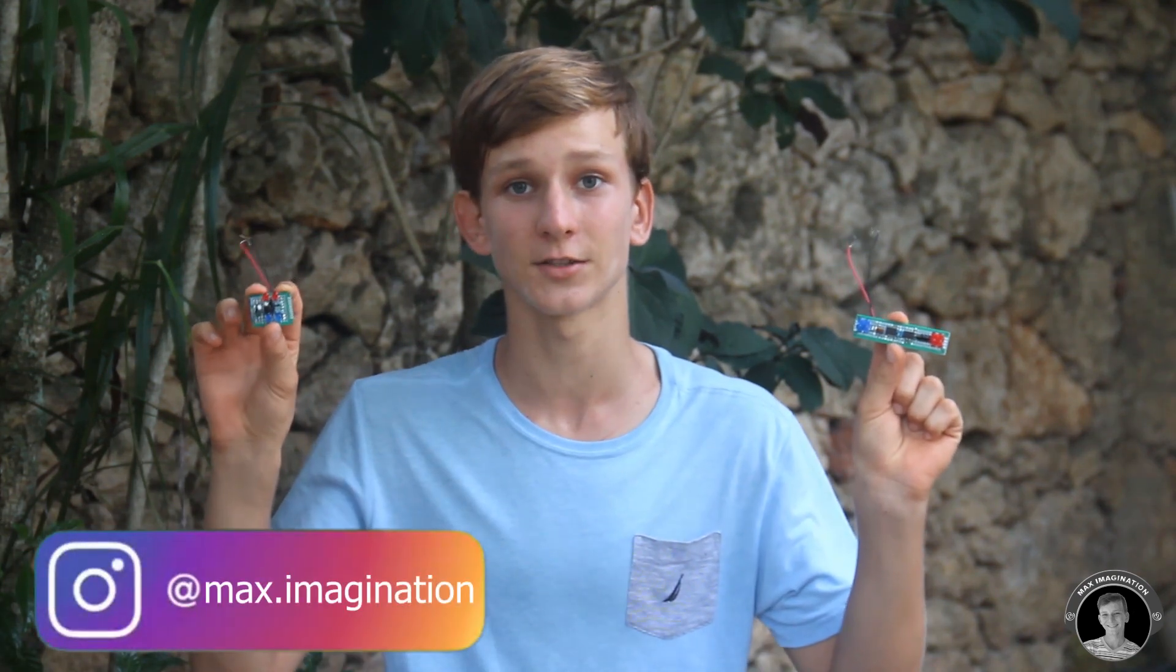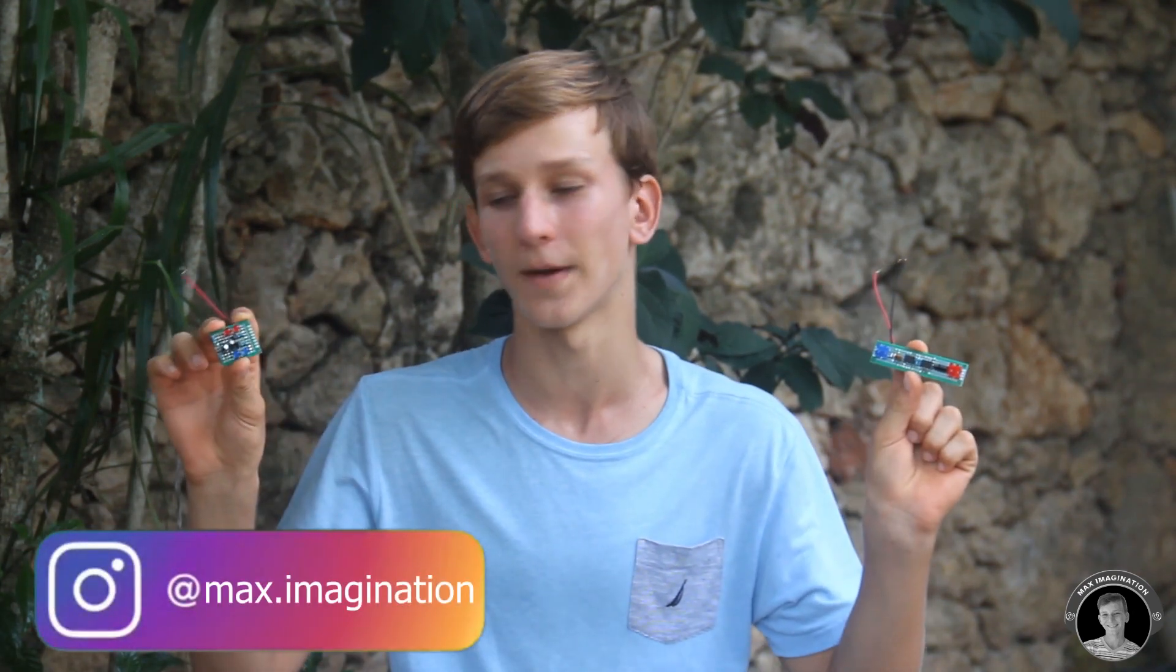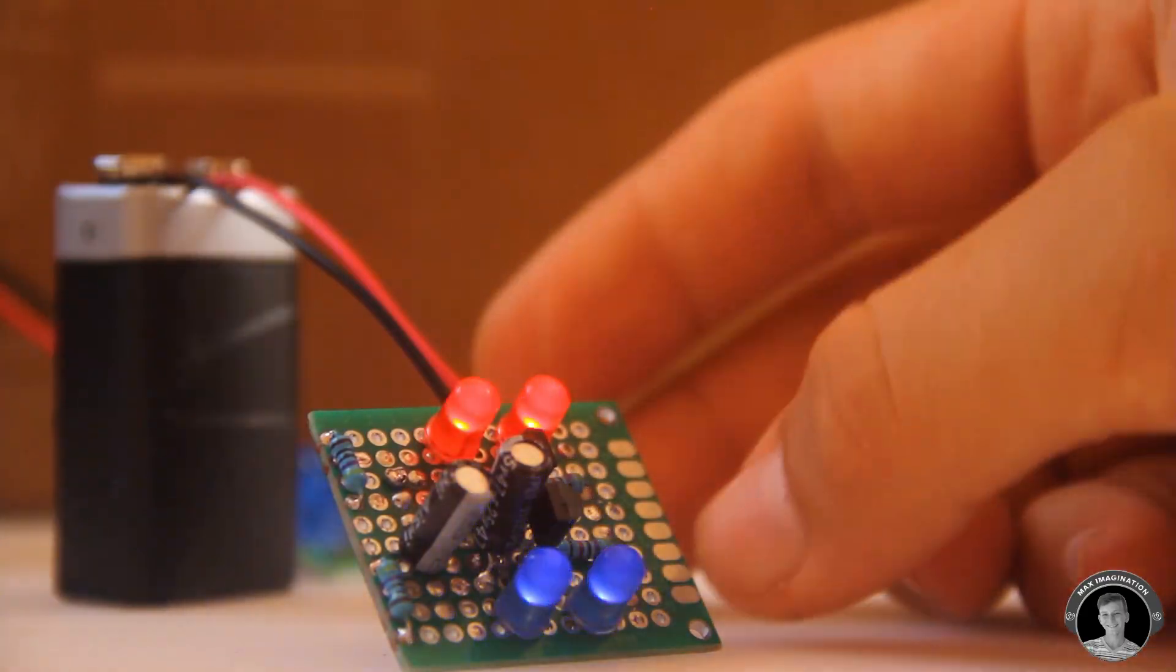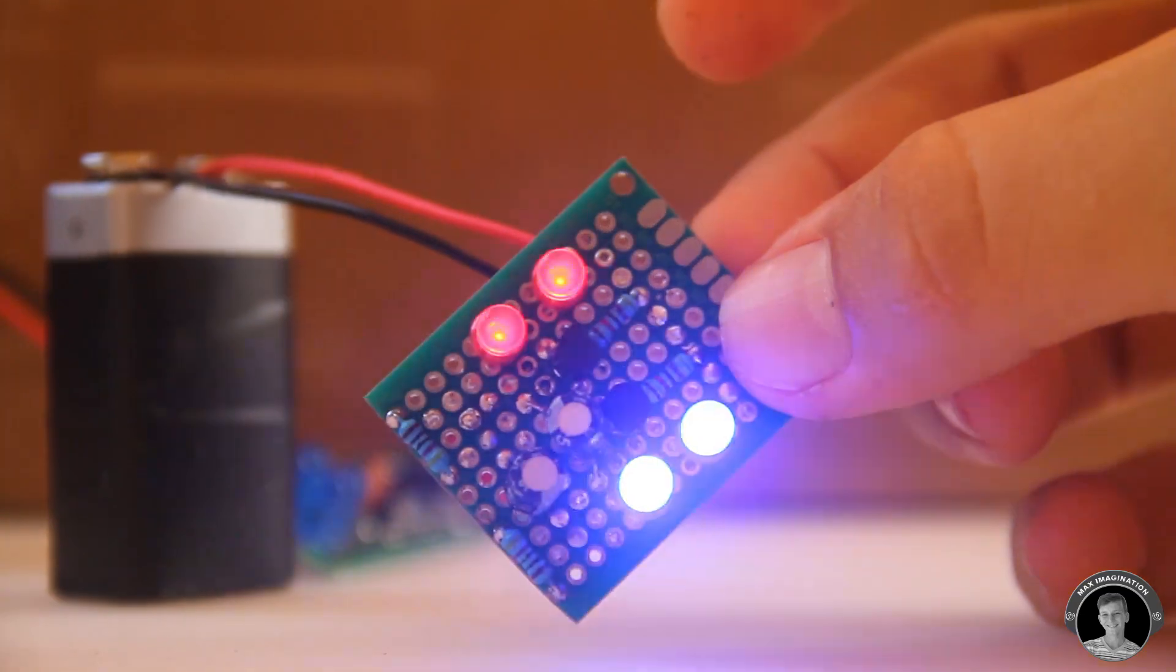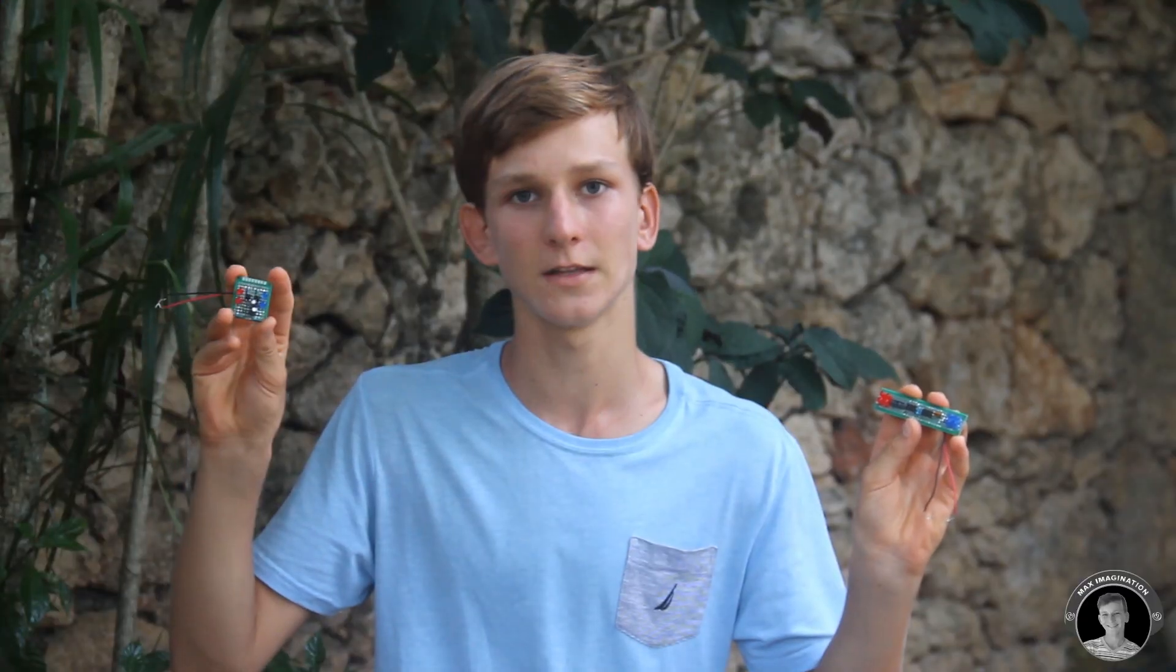What's up guys, it's Max here. In this video I'll show you how to make two different police light circuits that run off of a 9-volt battery. This one on my right hand uses transistors and just has a very basic blue to red and red to blue kind of fade to it, so it switches pretty quickly.